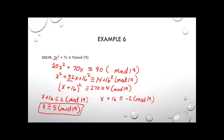And from the other equation, x is congruent to negative 18, which is positive 1 mod 19. You can plug both solutions into the original congruence to verify they are correct.